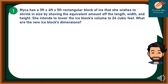Let's consider problem number one. Maika has a 3 feet by 4 feet by 5 feet rectangular block of ice that she wishes to shrink in size by shaving the equivalent amount off the length, width, and height. She intends to lower the ice block's volume to 24 cubic feet. What are the new ice block's dimensions? In order to solve this, let's identify first the given. The given dimensions are 3 feet by 4 feet by 5 feet, and the volume is equal to 24 cubic feet.